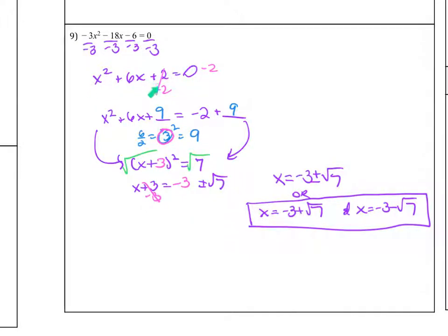Then I need to complete the square, so I subtract 2 from both sides. So this is x squared plus 6x plus, and I need to find the plus blank equals negative 2 plus blank.